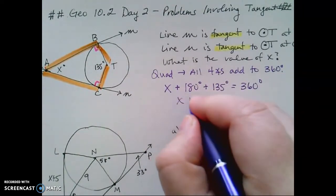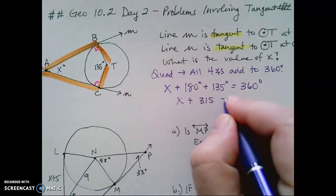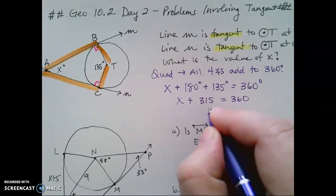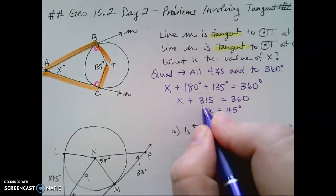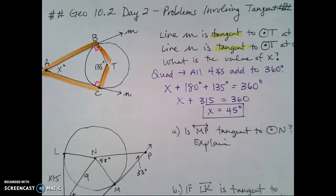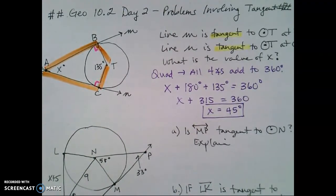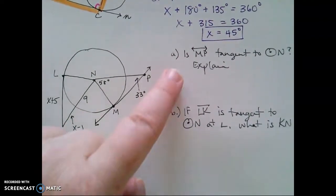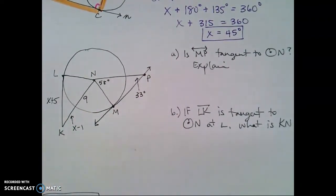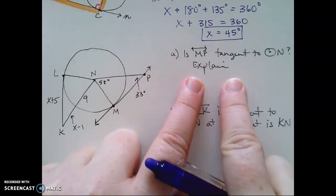And so when I combine like terms, and then subtract, I find that the value of X is, if I've done my math right, 45 degrees. Now our next problem, we were told in our notes, use this figure for both of these questions. So let's start with part A.